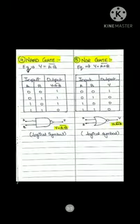Next comes the NAND gate. The NAND gate is the combination of the NOT gate and the AND gate, so the equation is Y equals A and B, bar. The truth table and the logical symbol for the NAND gate are shown.